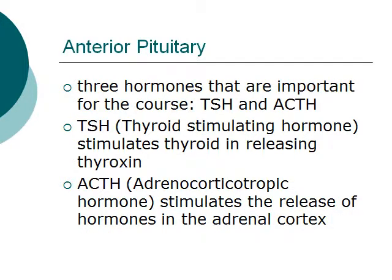For the anterior pituitary gland, there are three hormones of most importance for this course and perhaps for your exams, and those are TSH and ACTH. TSH, also called the thyroid stimulating hormone, stimulates the thyroid in releasing thyroxin. ACTH, or adrenocorticotropic hormone, stimulates the release of hormones in the adrenal cortex.